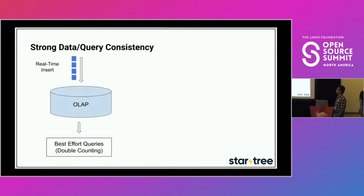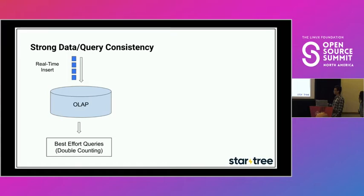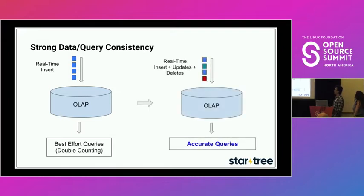The third point is strong data and query consistency. In the old days, OLAP had an append-only ingestion model — you never changed data once ingested. This was acceptable because a best-effort query guarantee could tolerate a few bad data points or duplicates. But nowadays with user-facing analytics, we not only need append-only inserts — sometimes we need to mutate data, sometimes data becomes obsolete and we need to delete it. And we still want the most accurate query result as quickly as possible.